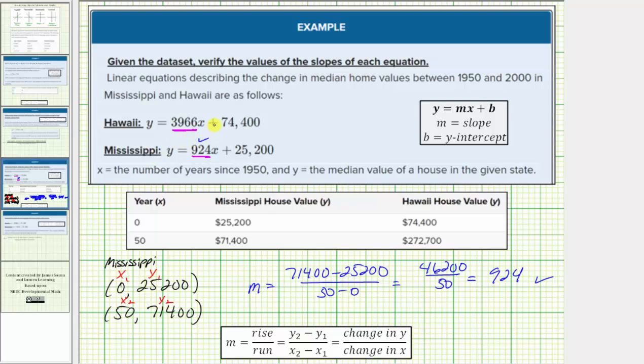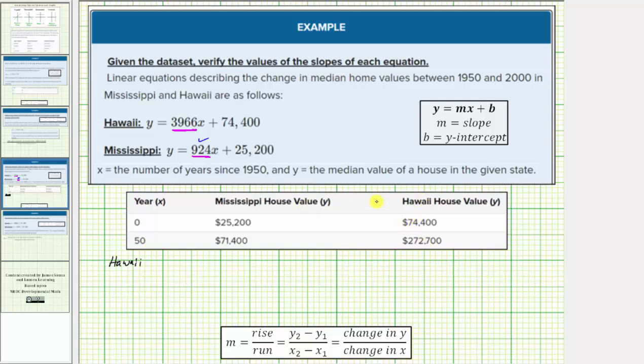And now we'll do the same for the equation involving Hawaii. For the ordered pairs for this equation, we'll use the first column and the third column. The first row gives us the ordered pair zero comma 74,400. The second row gives us the ordered pair 50 comma 272,700.